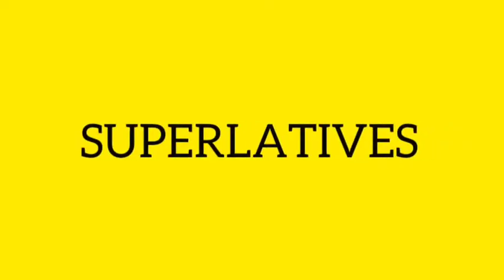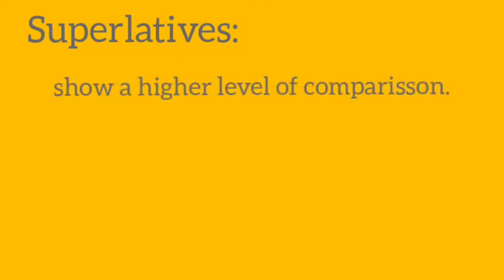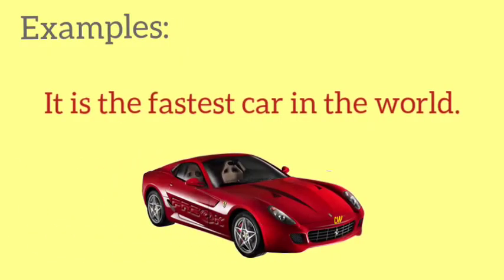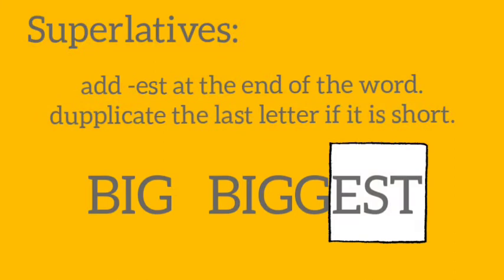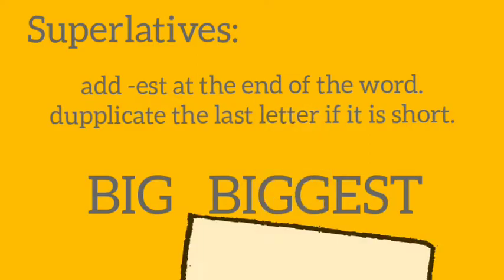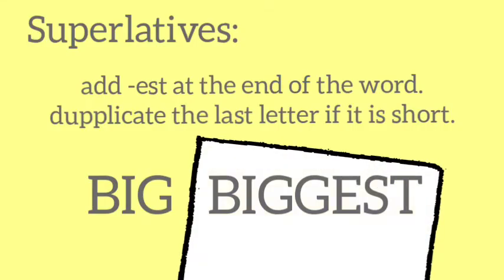On the other hand, we have superlatives. Superlative adjectives show a higher level of comparison between elements. They are words that compare more than two things. For example: it is the fastest car in the world. They add '-est' at the end of the word, and also, if the adjective is too short, it duplicates the last letter. For example: big → biggest.